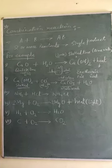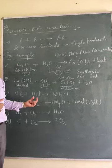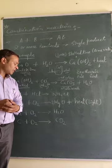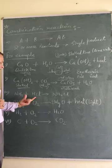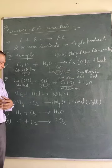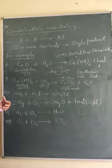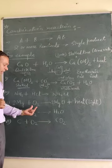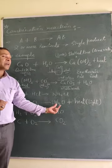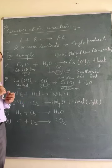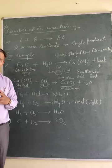Another example: when ammonia is added to hydrochloric acid, ammonium chloride is formed. Here ammonia is one reactant and hydrochloric acid is another — both combine to form ammonium chloride, which is a single product. Similarly, when magnesium is burned, it gives magnesium oxide — we have done this in class, burning a magnesium ribbon.